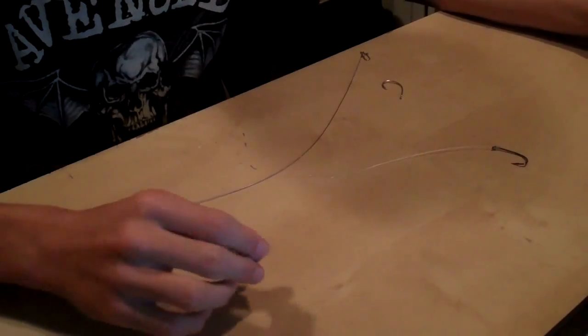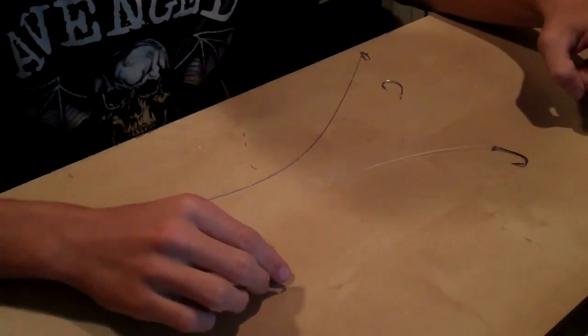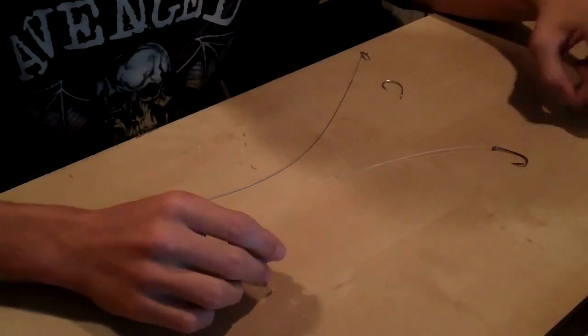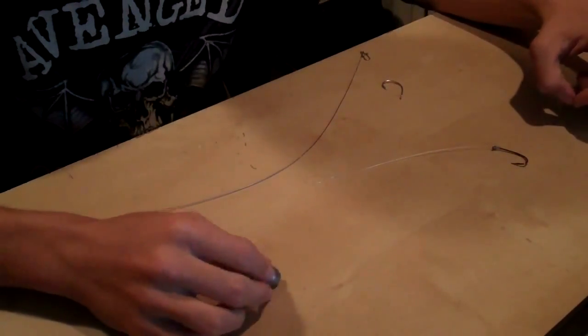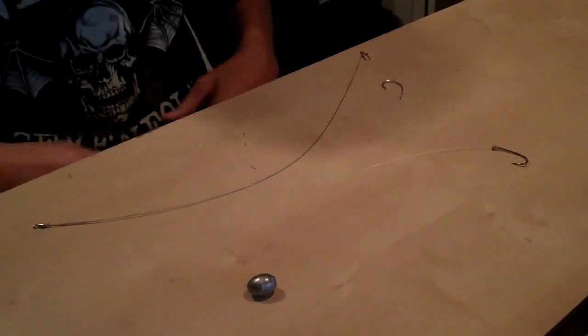This right here is an ounce just so I can chunk it pretty far with the bait rigged up on there, and so that it's not too heavy that it drags it down.